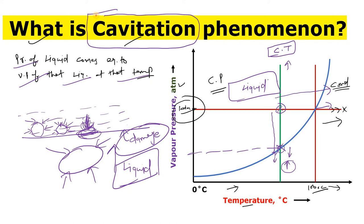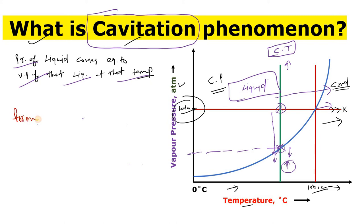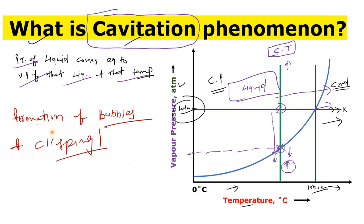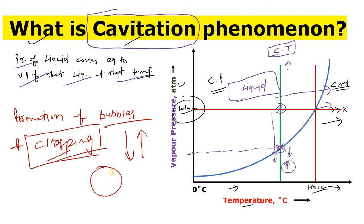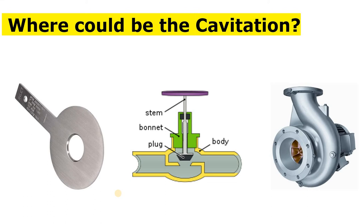This is the reason for cavitation — the formation of bubbles and then their collapsing. Cavitation is the formation of bubbles and their collapsing. It may happen due to some uncertainty where pressure reduces and then increases: first the bubble formation happens and then that bubble collapses.